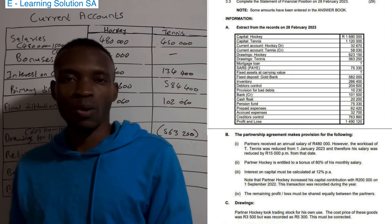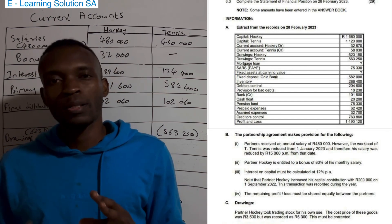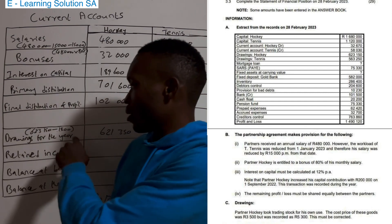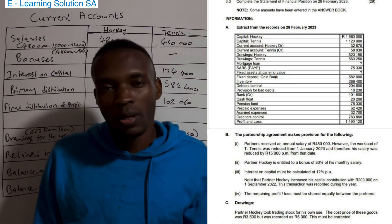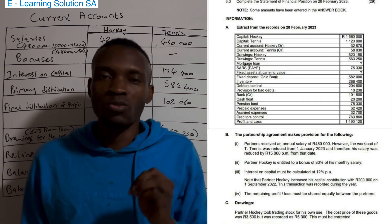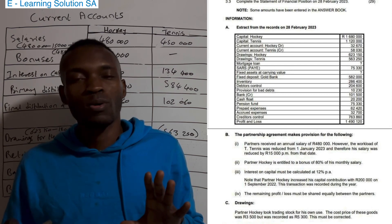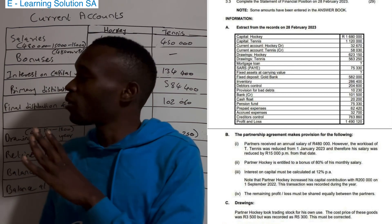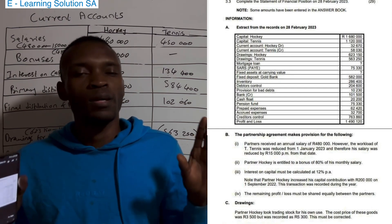Note that this is different from what we did in part one on the linked video. In part one they said the partner took additional stock, so we added to drawings. Here we are correcting a mistake because the higher amount was recorded — so we subtract. Watch both videos to understand the different principles involved.